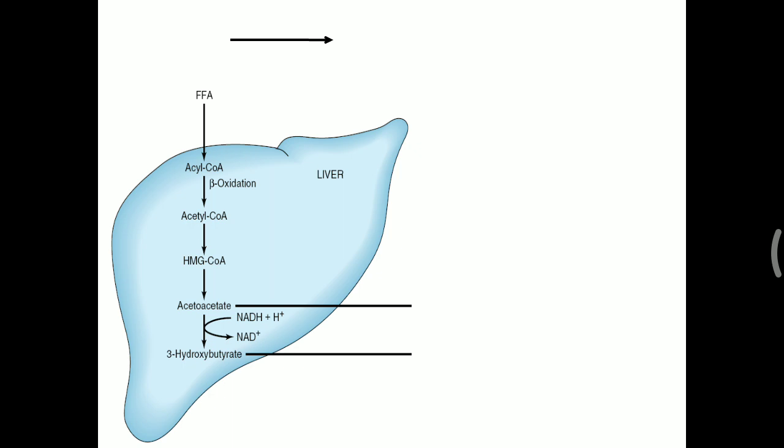Inside the liver mitochondria, acetyl-CoA is not metabolized in the TCA cycle but diverted to ketone body formation—acetoacetate as primary and beta-hydroxybutyrate as secondary. These are then shifted to extrahepatic tissues.